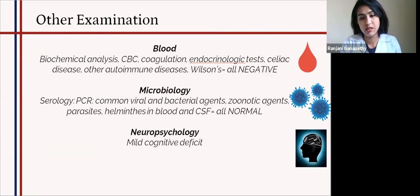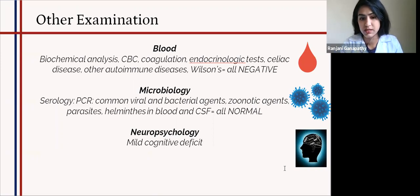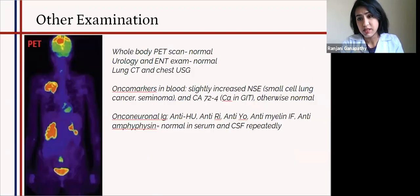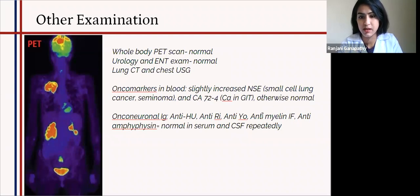We did the basic panel of all blood tests and checked for autoimmune diseases — all were negative. Microbiology PCR testing to see if it was something viral, bacterial, zoonotic, or parasitic — all normal. On neuropsychological tests, there was mild cognitive deficit with decreased psychomotor vigilance and decreased analytic and visual constructive abilities. Most importantly, a whole body PET scan was performed — it was normal. Urology and ENT exam, lung CT, and chest ultrasound were all normal. The only finding was slightly increased oncomarkers in blood for small cell lung carcinoma and gastrointestinal cancer.